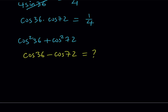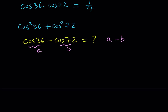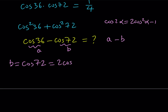Using the double angle formula for cosine — cosine 2α equals 2 cosine squared α minus 1 — cosine 72 can be written as 2 cosine squared 36 minus 1. Since cosine 36 equals A, this gives 2A squared minus 1. So B equals 2A squared minus 1.